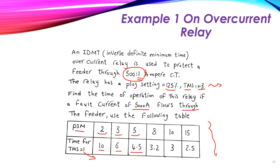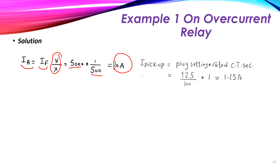Now, to use the table we need the plug setting multiplier (PSM). For that, we need the pickup current. The relay has a plug setting of 1.25, which is 125% of the CT secondary rated value of 1 ampere. So the pickup current equals the plug setting multiplied by the rated CT secondary current: 1.25 × 1 = 1.25 amperes.